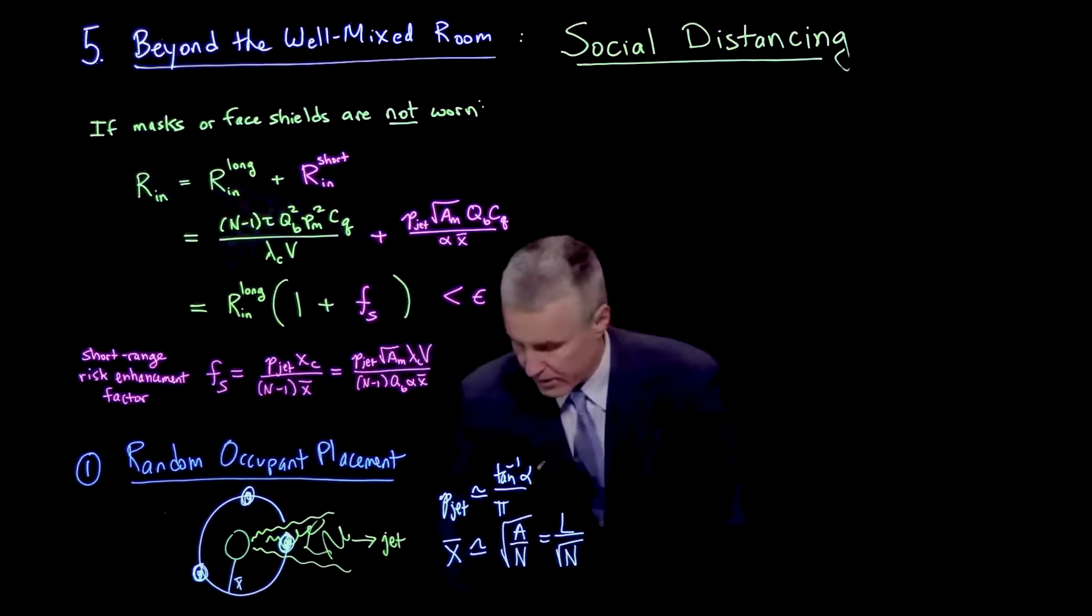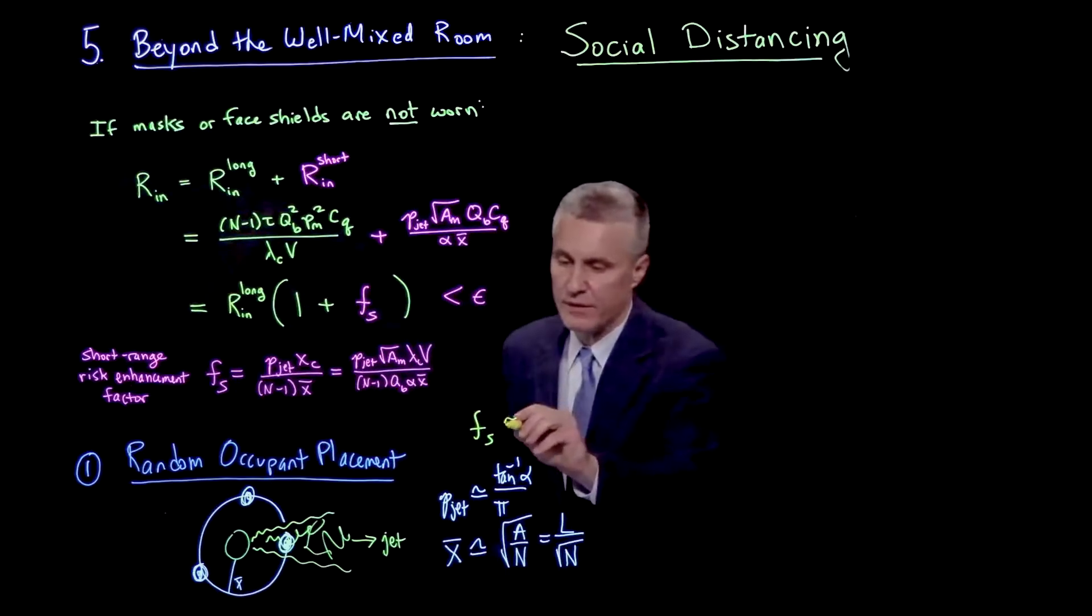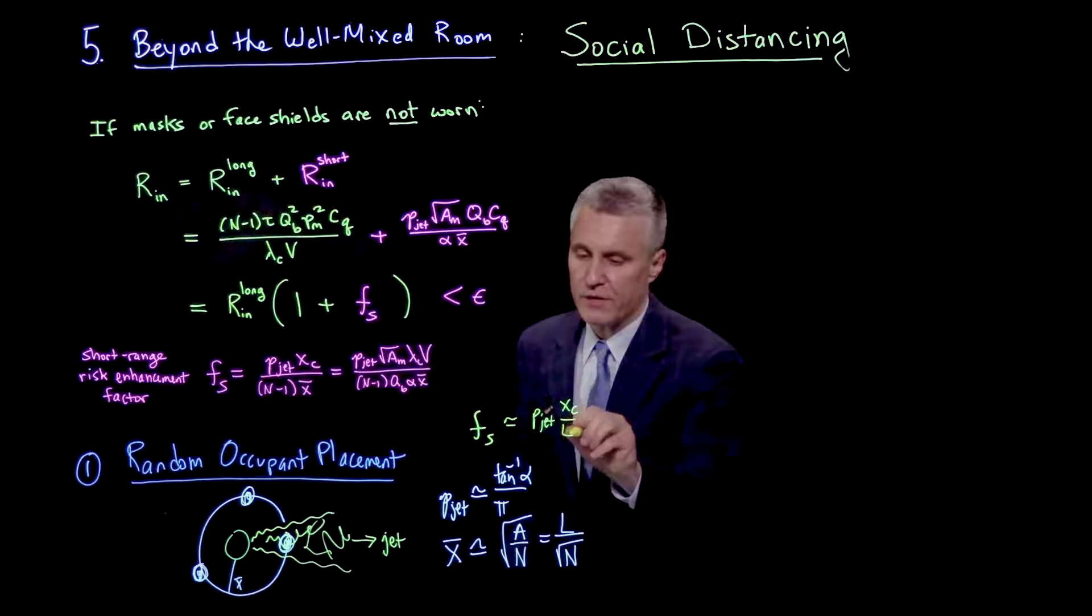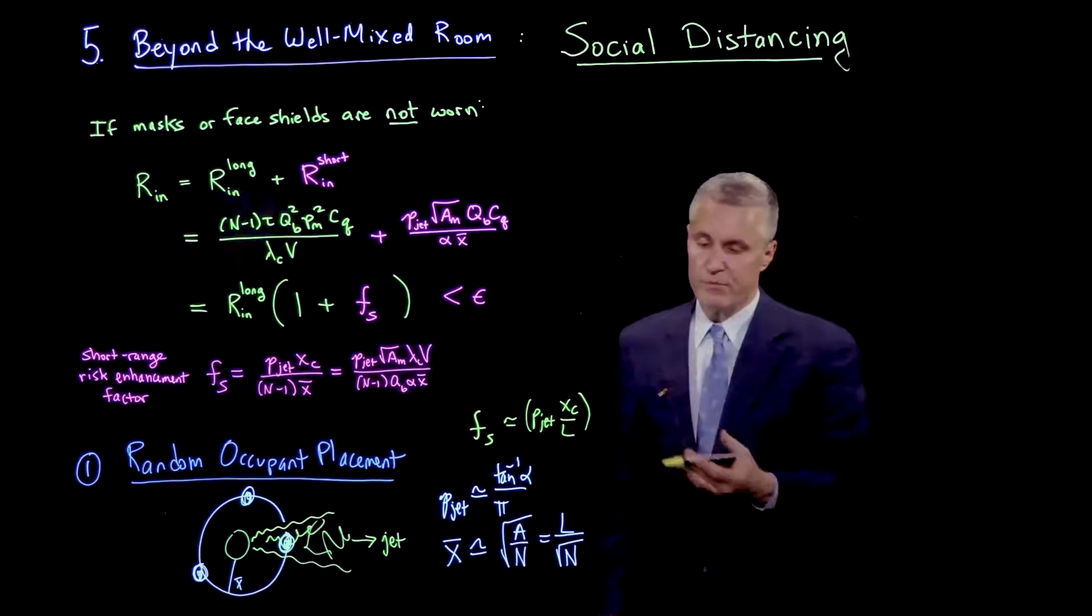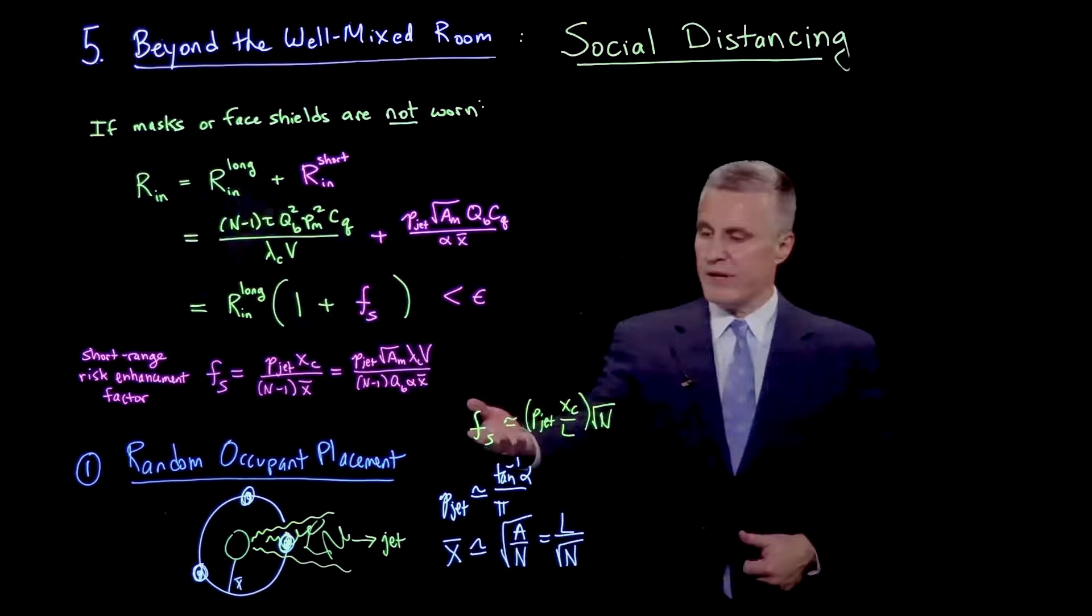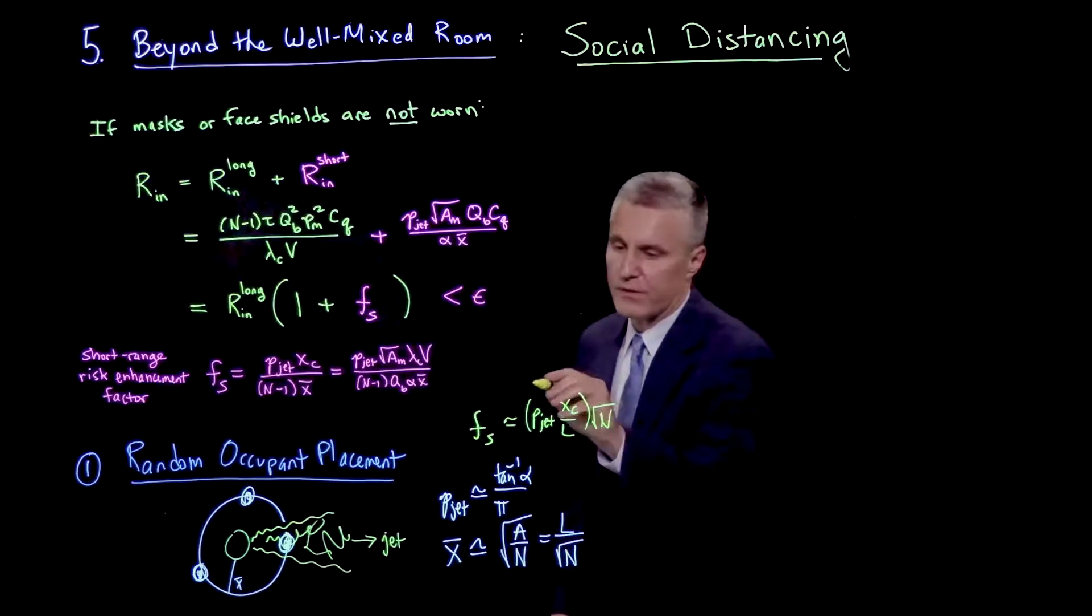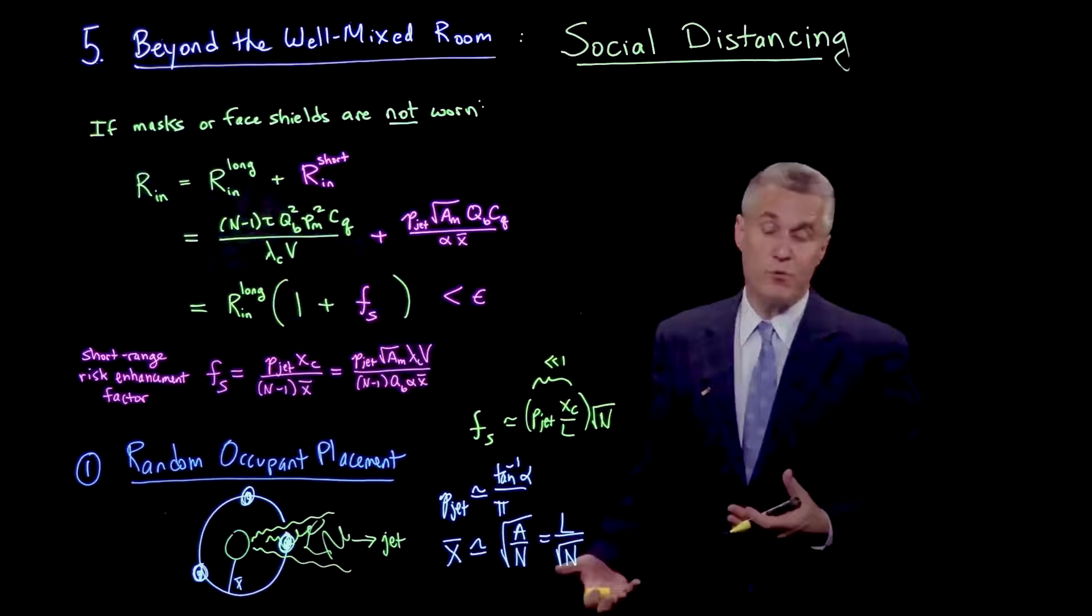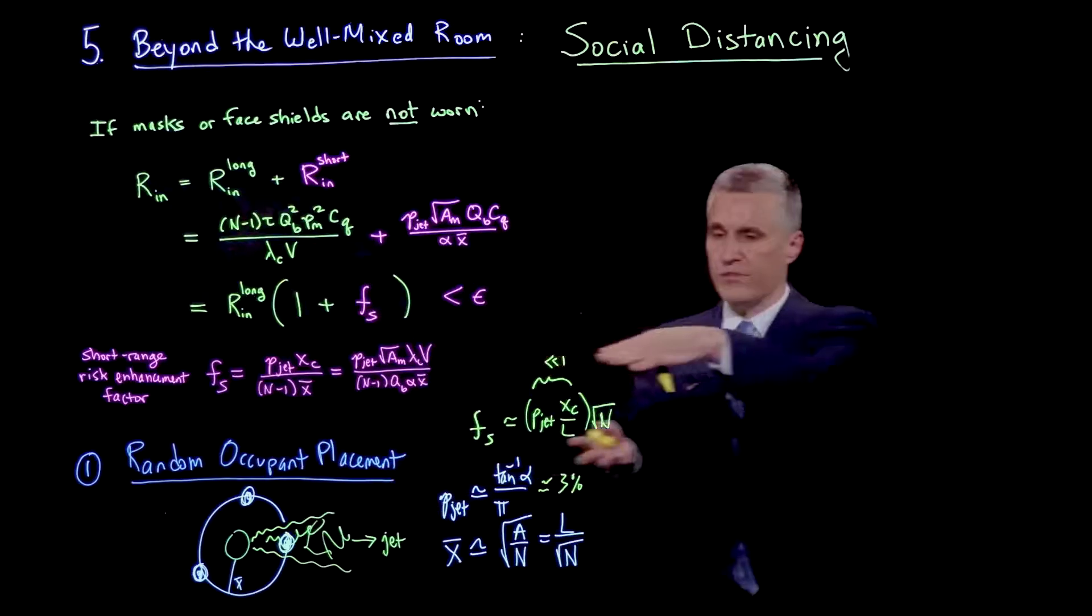With these two assumptions, we would then find that this short-range risk enhancement factor is P_jet times xc over l times the n minus 1 factor, which if n is larger than 1, we could estimate as square root of n. So what that shows is as more and more people pack into the room, we have an increase in the importance of short-range versus long-range transmission. This pre-factor here is typically much less than 1 because the probability of being in a jet, if alpha is around 0.1 to 0.15, turns out to be around 3%.